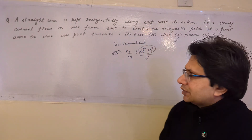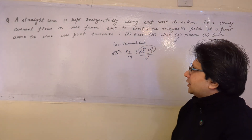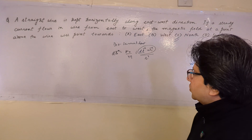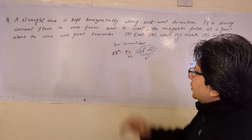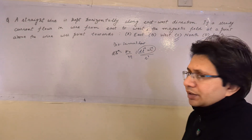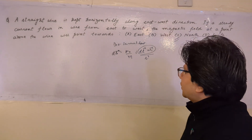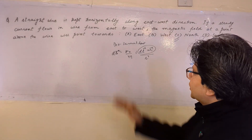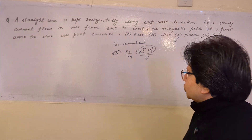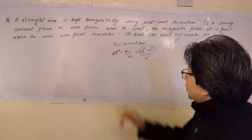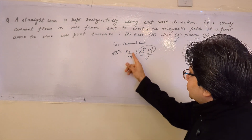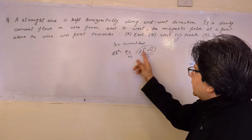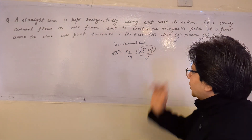This way we can use the direction of the magnetic field, because it is vector cross product based. dB equals μ₀ upon 4π times i dl cross r upon r cube.